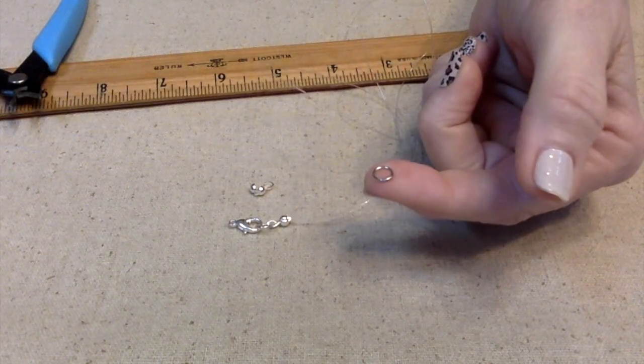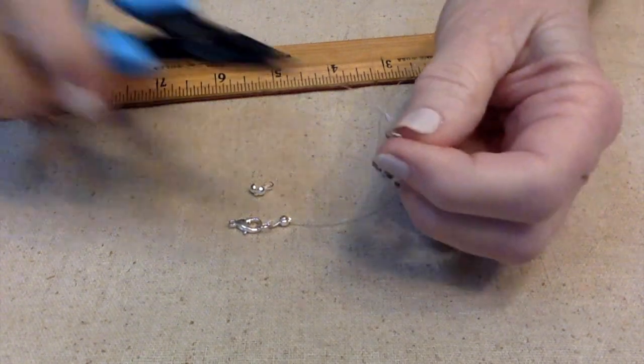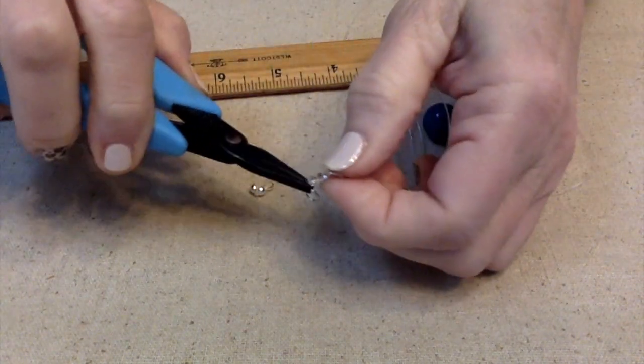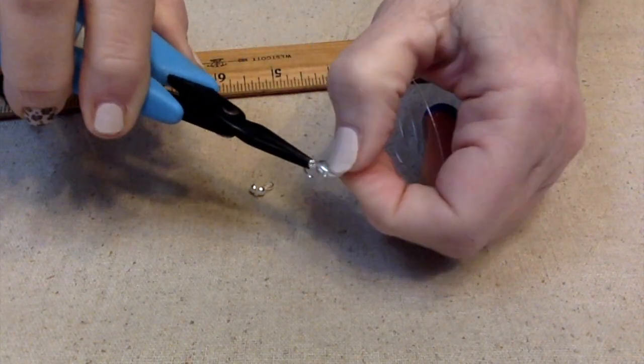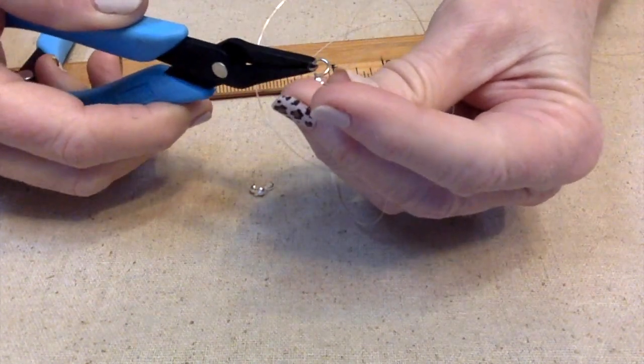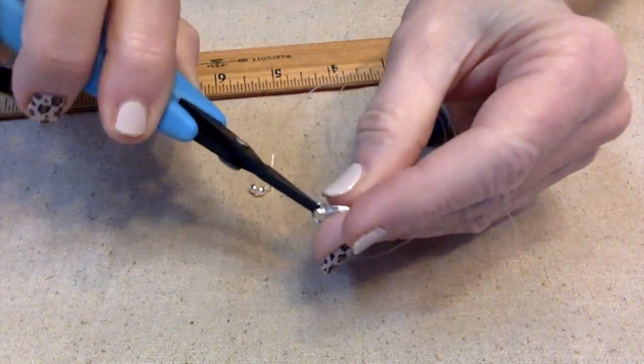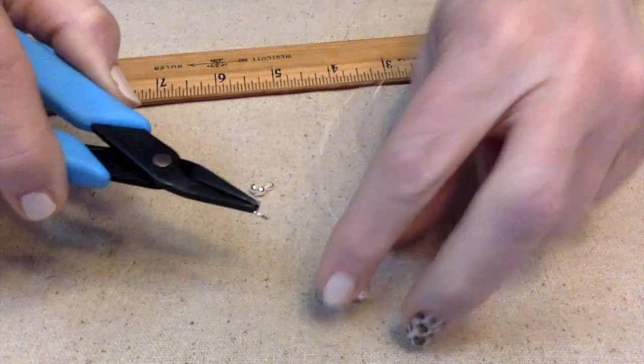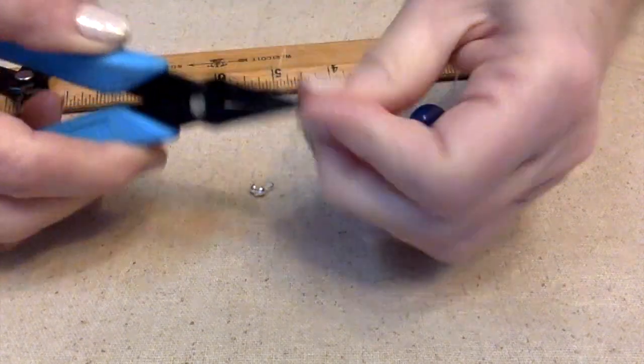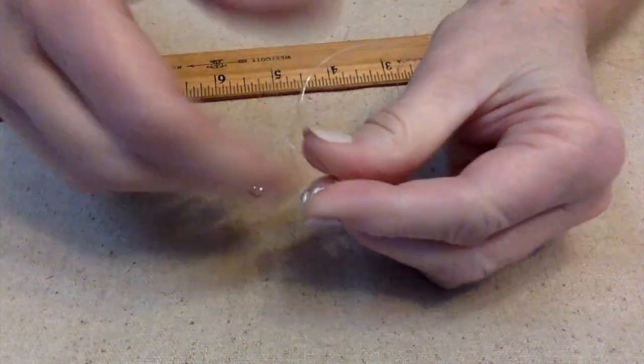Now we actually need two of these jump rings. So I'm going to open it up and thread it on the bottom of this lobster claw here. It needs to be opened up a little bit more. And then close it back up, which I probably should have used my little tool. But that worked.